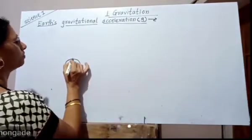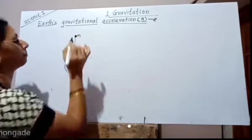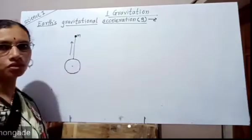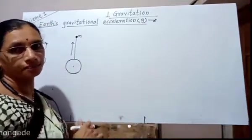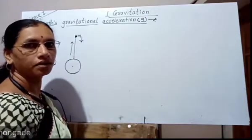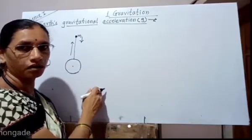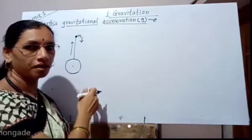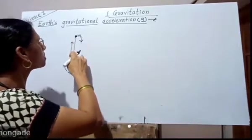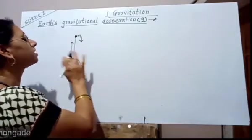If we throw any object of mass m in the upward direction, it goes opposite to the direction of gravitational force, and therefore its velocity goes on decreasing. After some point it becomes zero, and then it starts to fall. When it falls, it comes towards the center of the earth, which is in the direction of gravitational force, because the direction of gravitational force is towards the center of the earth.